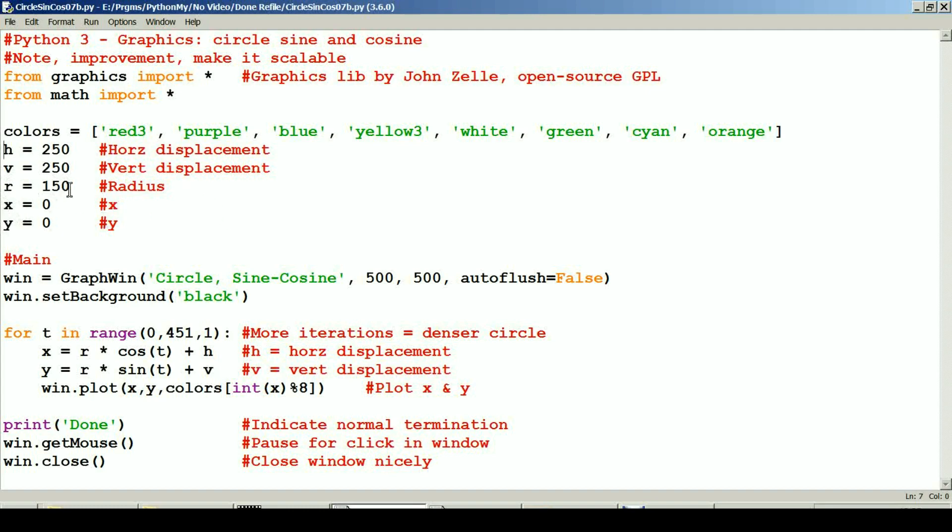So we've got everything set up now. All of our stuff is ready to go. And here's where the active code starts. We're going to create an object. This is our window. We're going to call it circle sine cosine. It's going to be 500 by 500. The next line is set background to black. So the background of the window is going to be black.